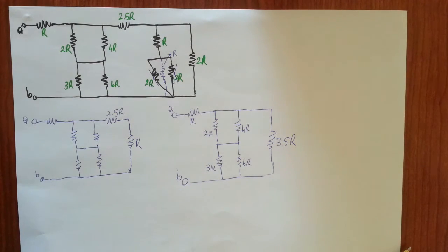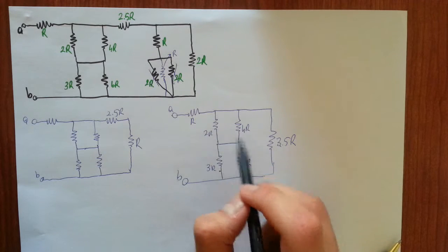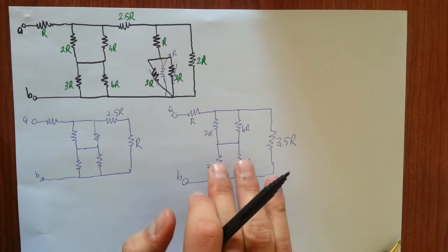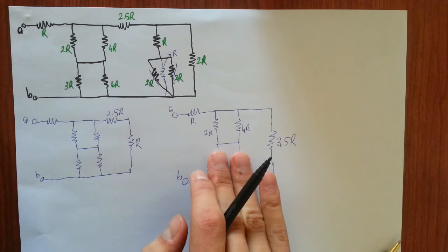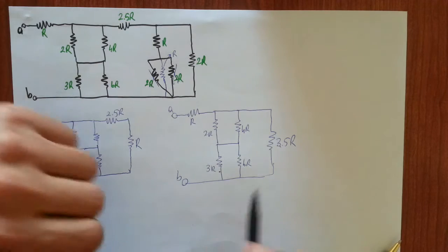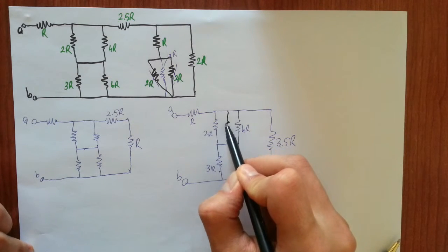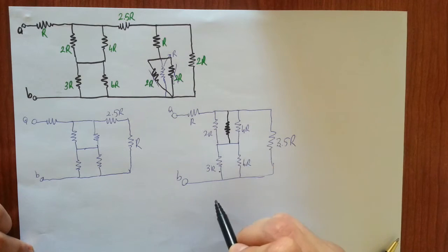To operate on this resistor, we shall reduce these two branches. 2R and 4R are in parallel with each other. As you can see, they are obviously in parallel with each other, so we can reduce these two into one single resistor.